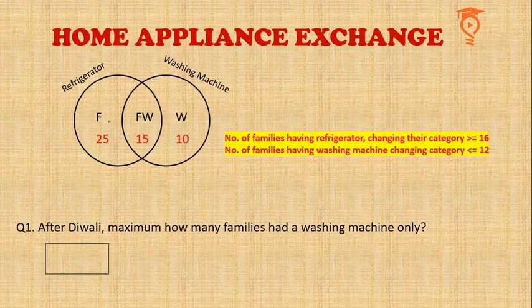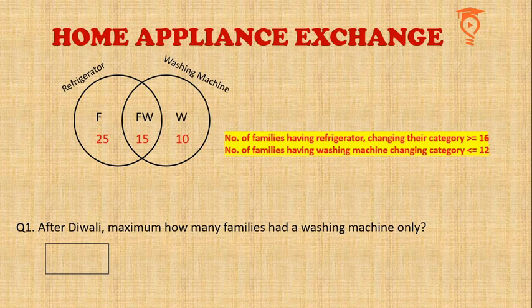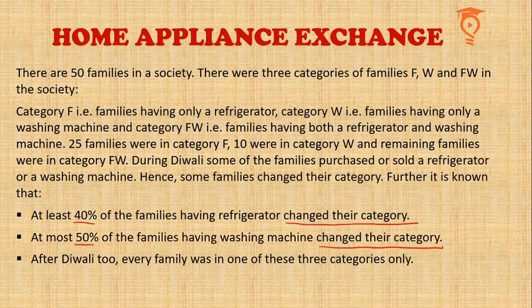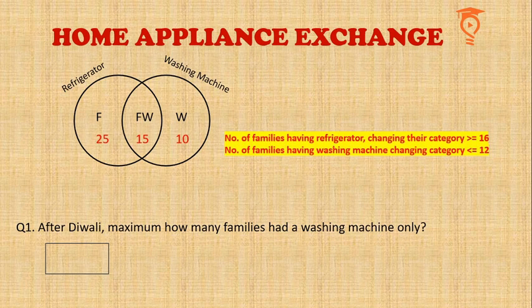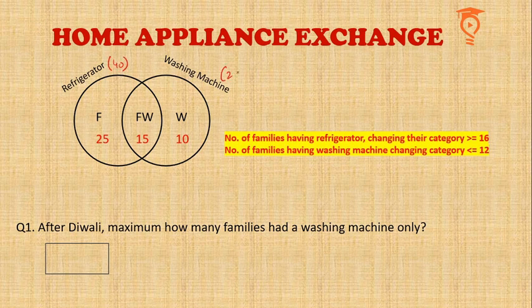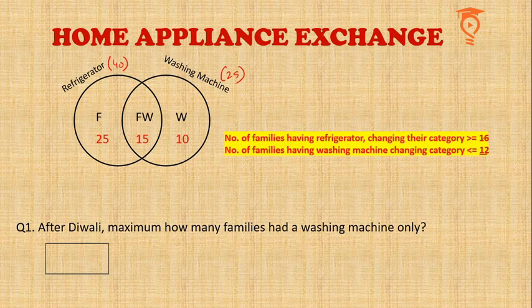This is a small setup I have made to help you with the questions. This is the Venn diagram of number of families having refrigerator, washing machine, or both. The category names are written in the relevant regions along with the number of families. The previous information given in percentage form has been converted into number form. Families having refrigerator and changing category must be greater than or equal to 40% of 40. There are 40 families with a refrigerator and 25 with a washing machine. 50% of 25 is 12.5 — since the number of families cannot be decimal, and it must be less than or equal to 12.5, we take the maximum as 12. These numbers will help us decide a lot of things.